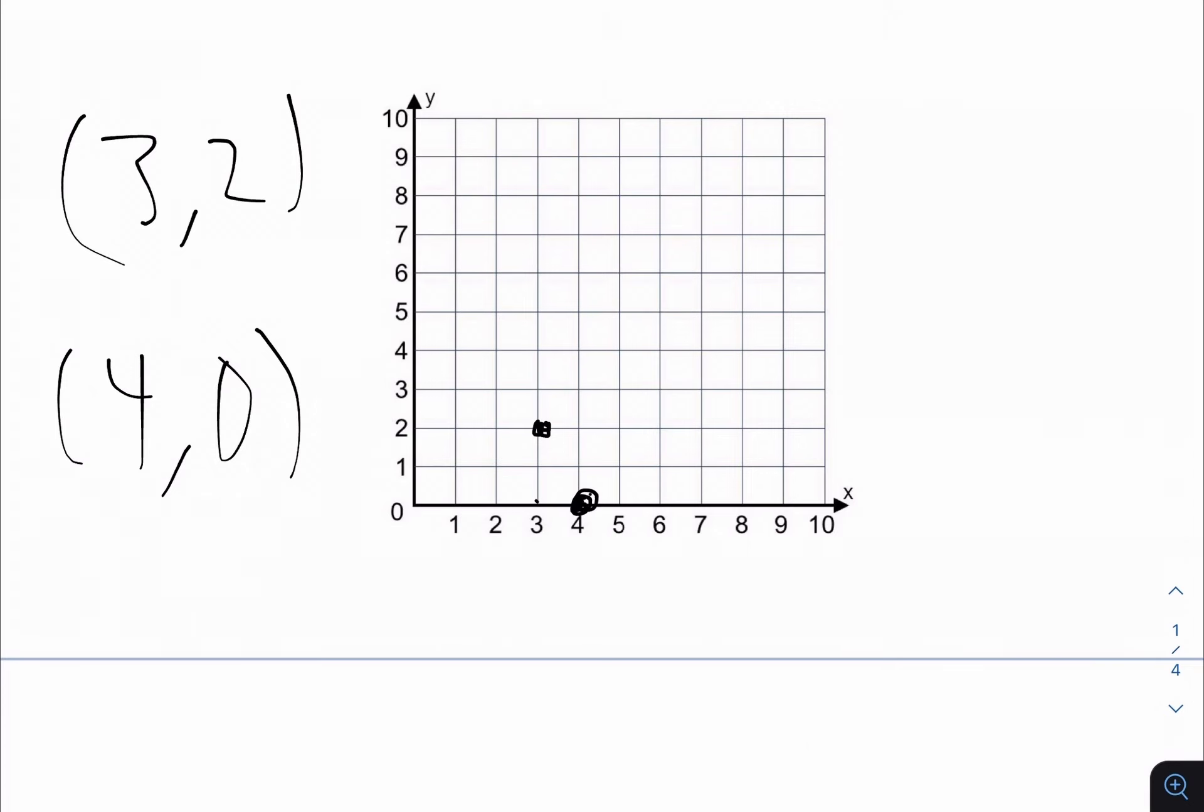So keep in mind that (4, 0) and all points with a y-coordinate of 0 will always be on the x-axis. So like (5, 0), (10, 0), all of them will be on this axis.